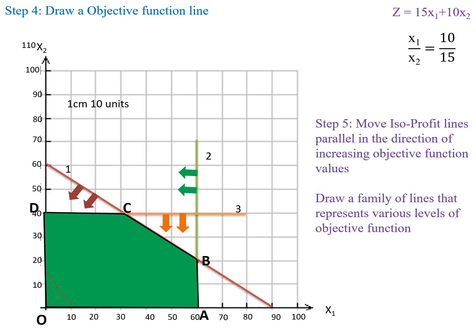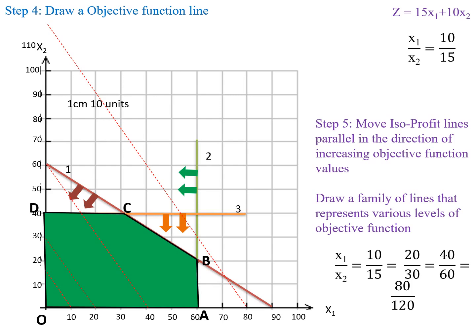Next, move this isoprofit line parallel in the direction of increasing objective function values. Draw parallel lines to the objective function line with the same slope. Since the slope is 10 by 15, equivalent ratios are 20 by 30, 40 by 60, and 80 by 120. We draw lines with coordinates (20, 30), (40, 60), and (80, 120), all parallel to the original objective function line.